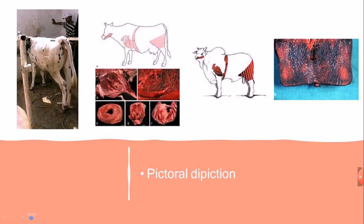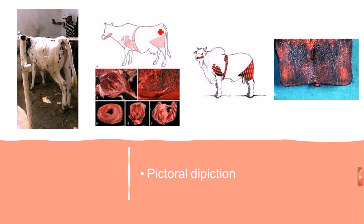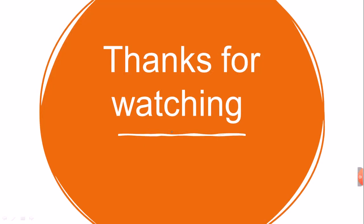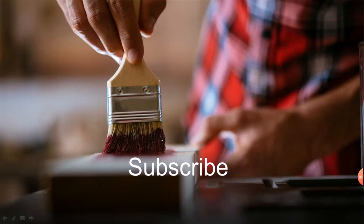The pictorial depictions show the hind legs of the animal where the large muscles are swelled, along with discoloration or black coloration of the muscles. This is all about Black Leg disease. If you are new to this channel, please subscribe, and thanks for watching.